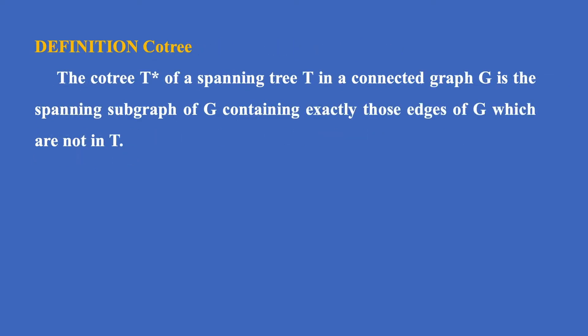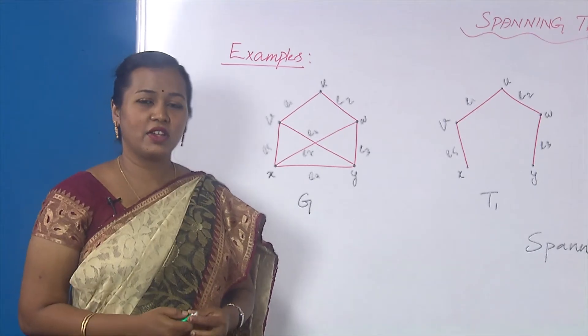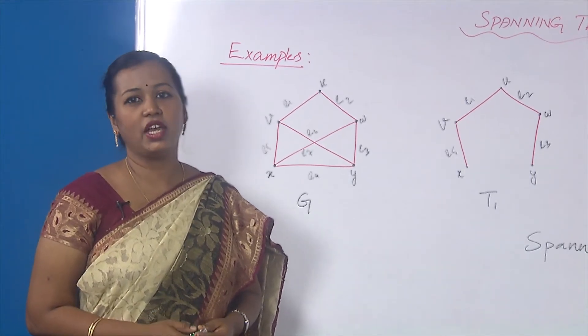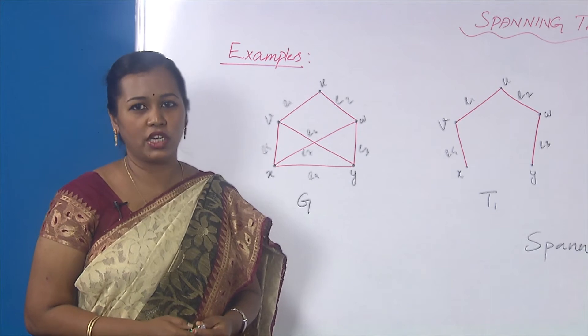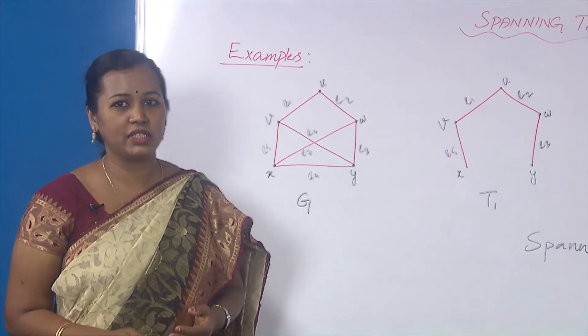Let us see the definition of a core tree. The core tree T* of a spanning tree T in a connected graph G is a spanning subgraph of G containing exactly those edges of G which are not in T. To better understand the concept of the spanning tree and the core tree, let us now see some examples.